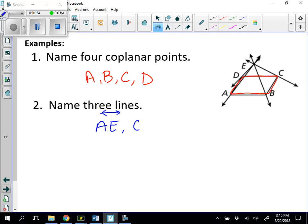Line CE would work. We also have line BE. And the fourth line, if we wanted to name all of them, would be line DE.